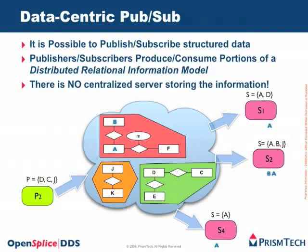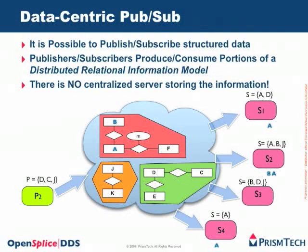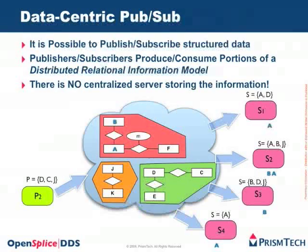Let's assume that P1 goes away because it disconnects, crashes, or was connected through a mobile ad hoc network. And let's assume S3 comes around, interested in B, D and J. In this case the middleware will still deliver the last value of B, although the writer of B is gone. Again, there is no centralized server storing this information — the information lives in the distributed system.